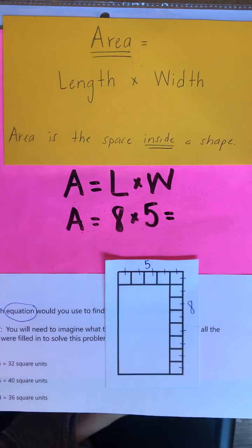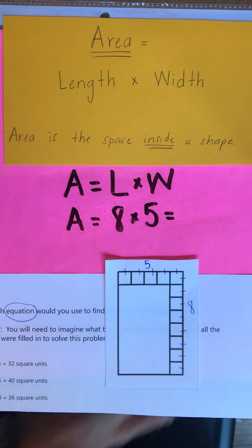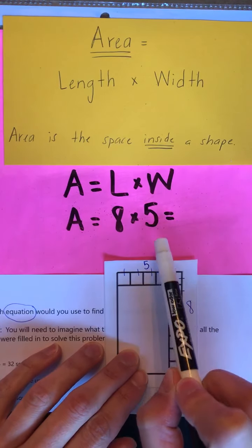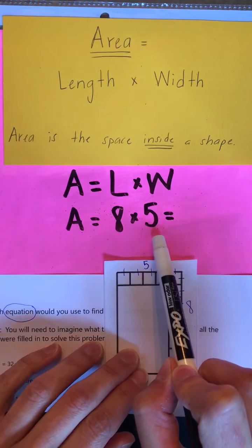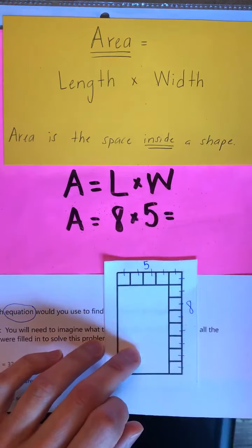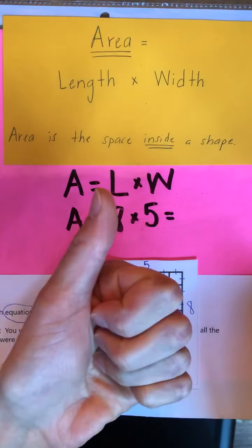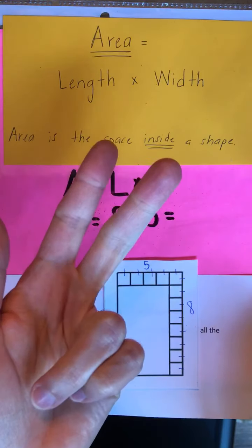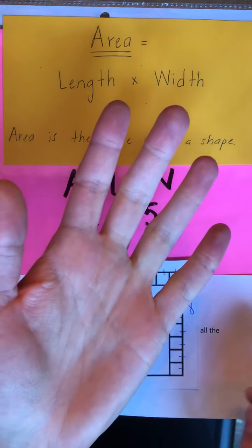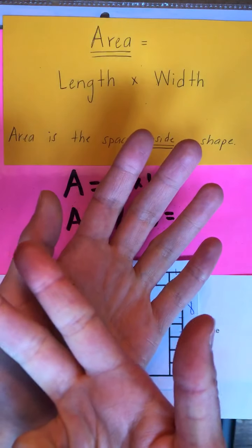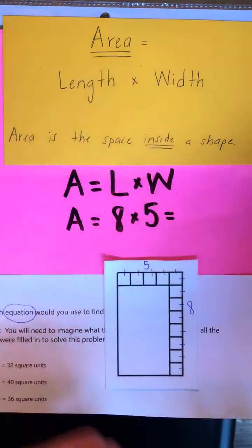What is 8 times 5? If you're not sure, you can use our friendly number 5 because that's an easy number to skip count by, and we can skip count by 5s eight times. Let's do that together: 5, 10, 15, 20, 25, 30, 35, 40. Very good.